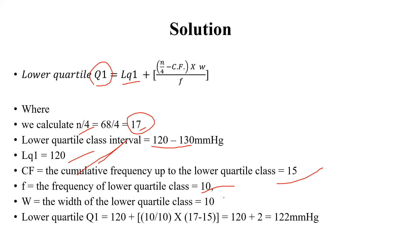120 cumulative frequency up to column 15 is given in the dataset, then 10 frequency quartile, breadth is given. Put all the values in this equation and do the simple calculation, then you will get this answer 122.